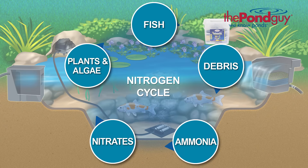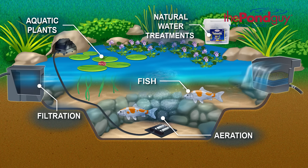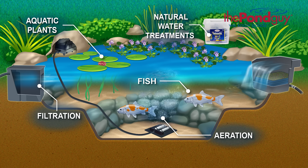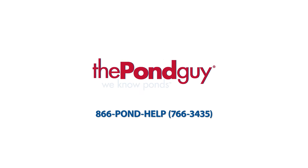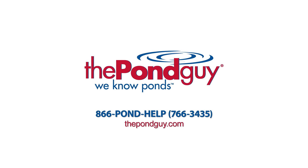Now that you have an understanding of the nitrogen cycle and the five key elements to a balanced pond, you can look forward to a clean, clear, and healthy pond all year long. For more expert tips, visit us online at thepondguy.com or give us a call at 866-POND-HELP.